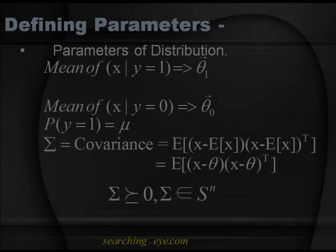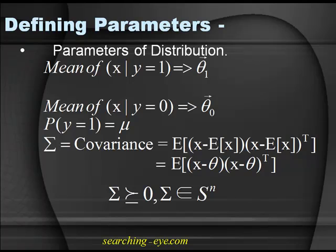The parameters are: mu, theta-naught, theta-1, and covariance matrix Sigma. Theta-1 is the mean vector of the training set of positive examples, and theta-naught is the mean vector of the training set of negative examples. When y equals 0, take all training instances where the target vector is 0 and put them in one group; when y equals 1, put them in another group. Take the mean of both groups to get theta-naught and theta-1.